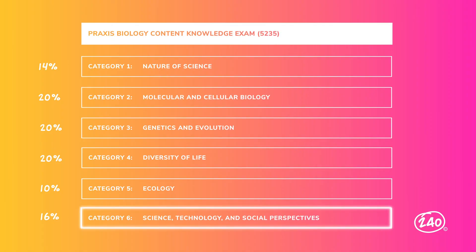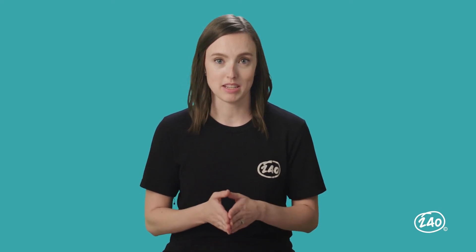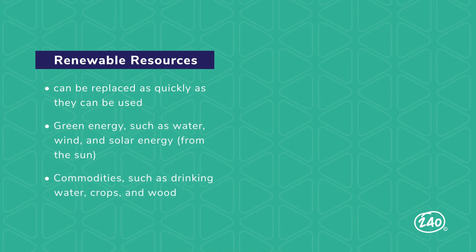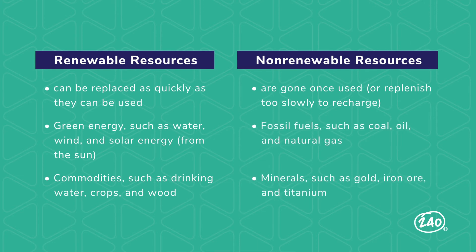All the information from that tutor is also written out in text in the study guide, so you can choose how you want to learn. The last category is science, technology, and social perspectives — topics that didn't fit elsewhere. You need to know the impact science has on things outside of science. A big topic is resource management. Renewable resources can be replenished, such as energy from water, wind, and the sun, as well as commodities like drinking water and wood. However, renewable commodities can still run out if not managed properly — for example, cutting down trees faster than we can grow new ones. Non-renewable resources replenish too slowly, so once they're gone, they're gone. These include coal and iron ore.